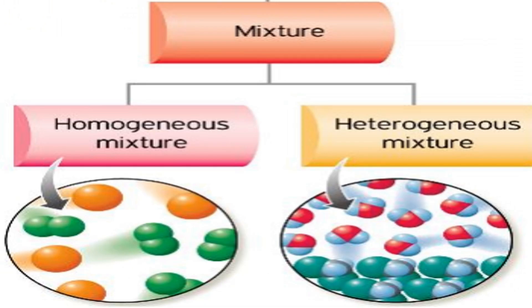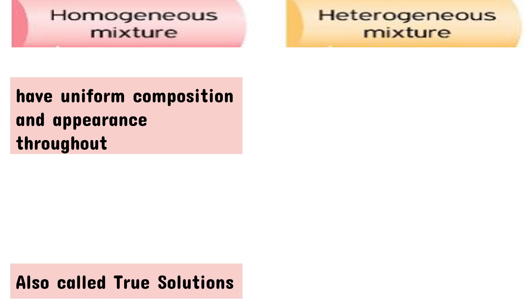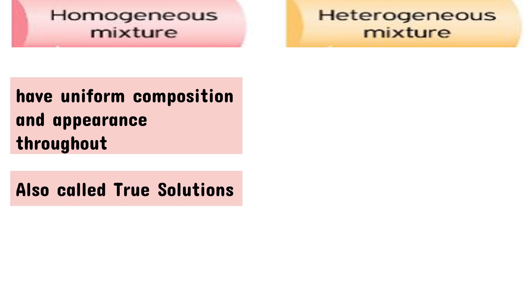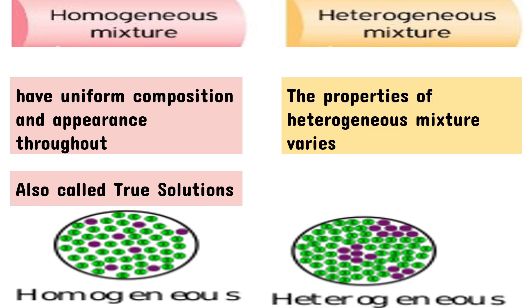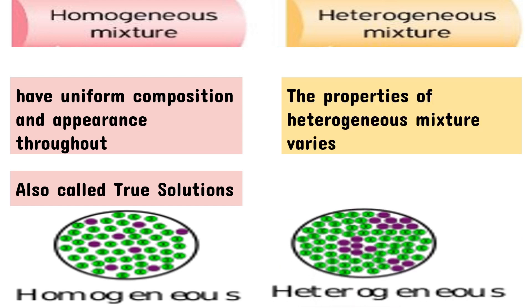Mixture is further classified into homogeneous mixture and heterogeneous mixture. Homogeneous mixtures have uniform composition and appearance throughout and are also called true solutions. Particles of homogeneous mixtures are evenly distributed. In heterogeneous mixtures, the properties vary and the particles of the components clump together and form large aggregations.